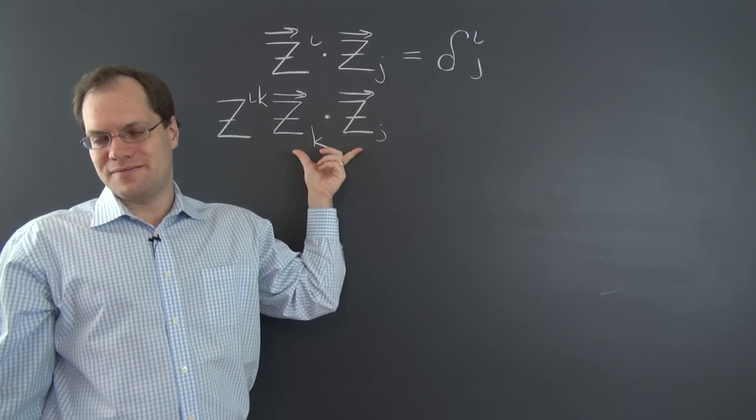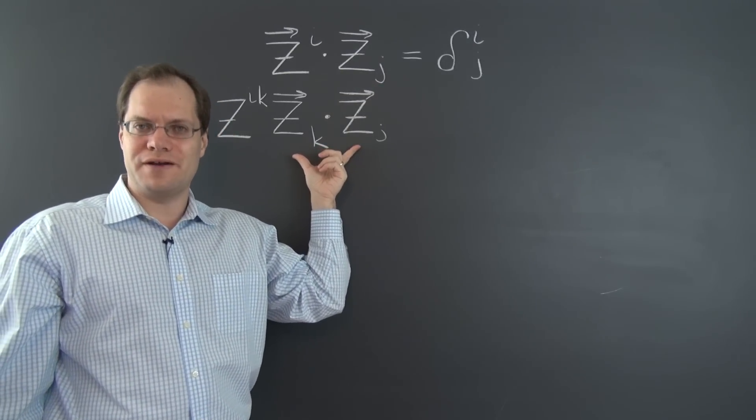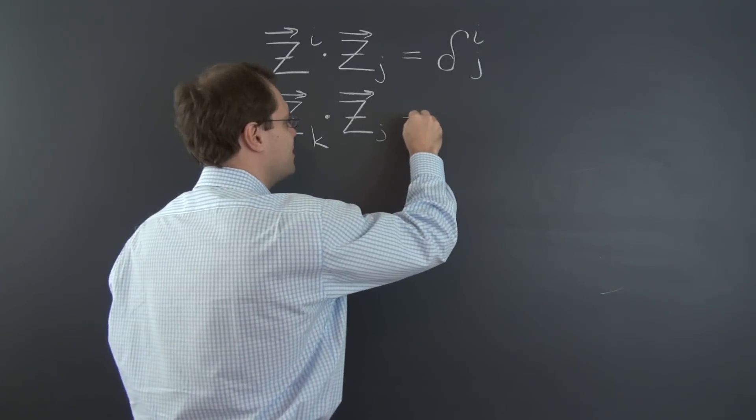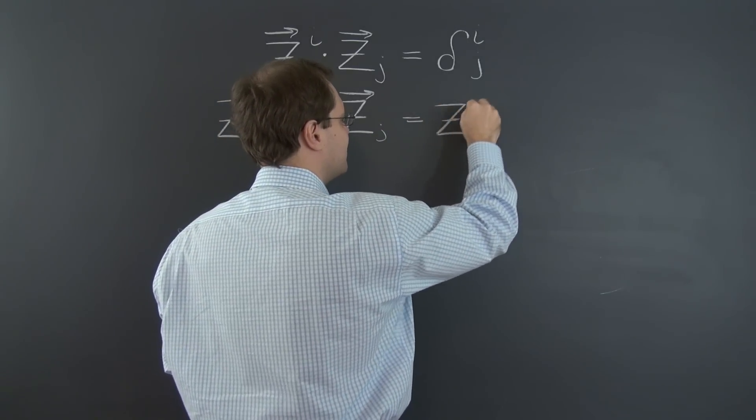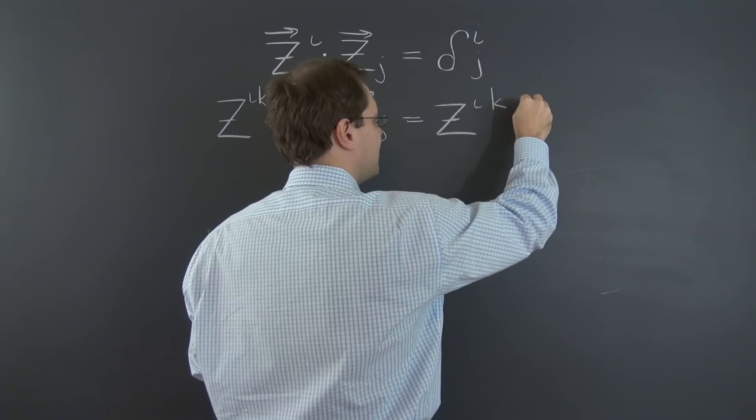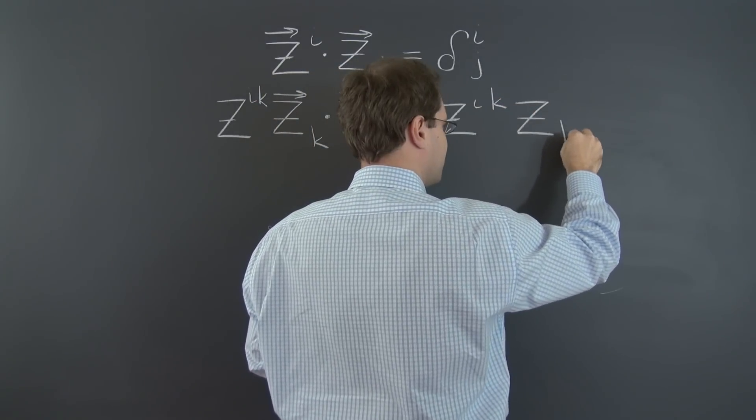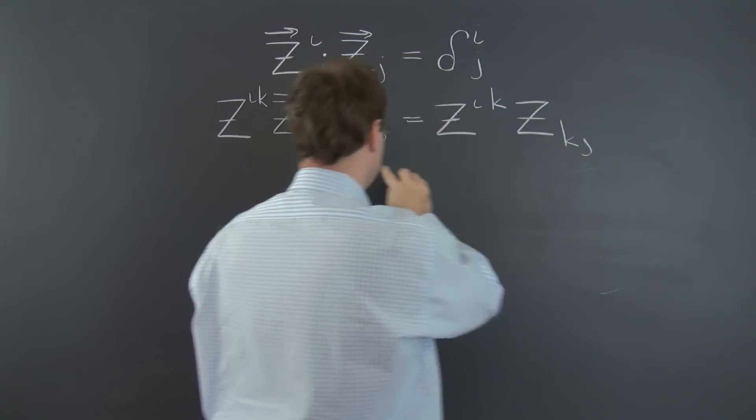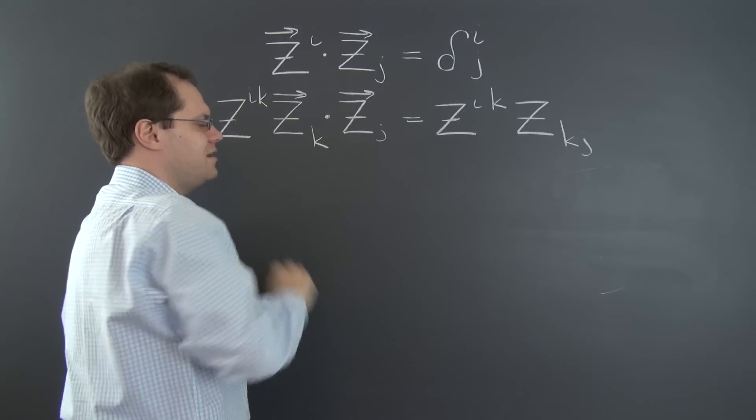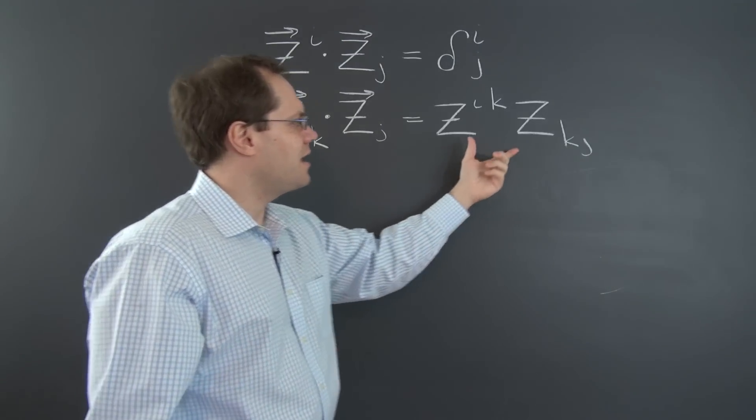And now we're dotting it with z_j. And this is, by its very definition, the covariant metric tensor. So we have δ^i_k z_k·z_j, because z_k·z_j is the dot product of z_k and z_j.